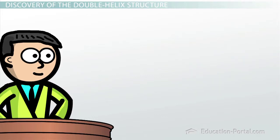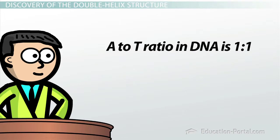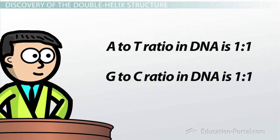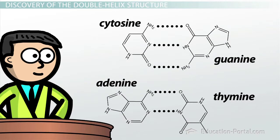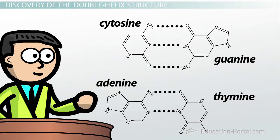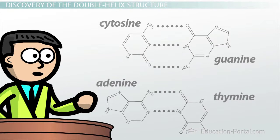Data from another lab indicated that there is a one-to-one ratio between adenine and thymine, and also a one-to-one ratio between guanine and cytosine. By using cardboard cutouts of the bases, Watson realized that two hydrogen bonds could form between A and T, and three hydrogen bonds could form between G and C. Interestingly, Watson originally predicted that there were only two hydrogen bonds between G and C, but we know now that there are actually three. Even a Nobel Prize winning scientist is wrong sometimes.